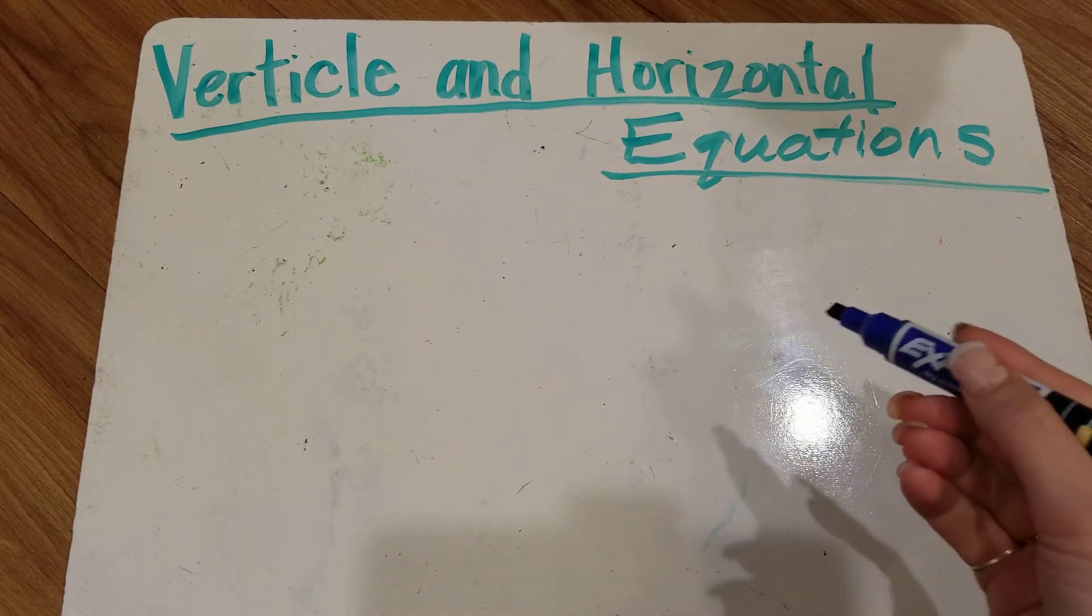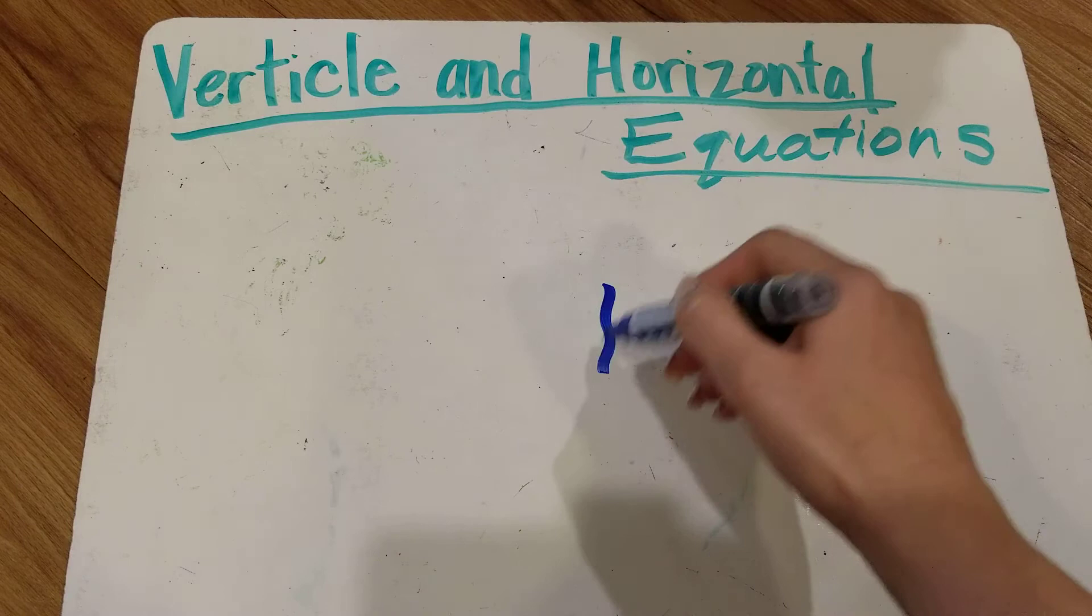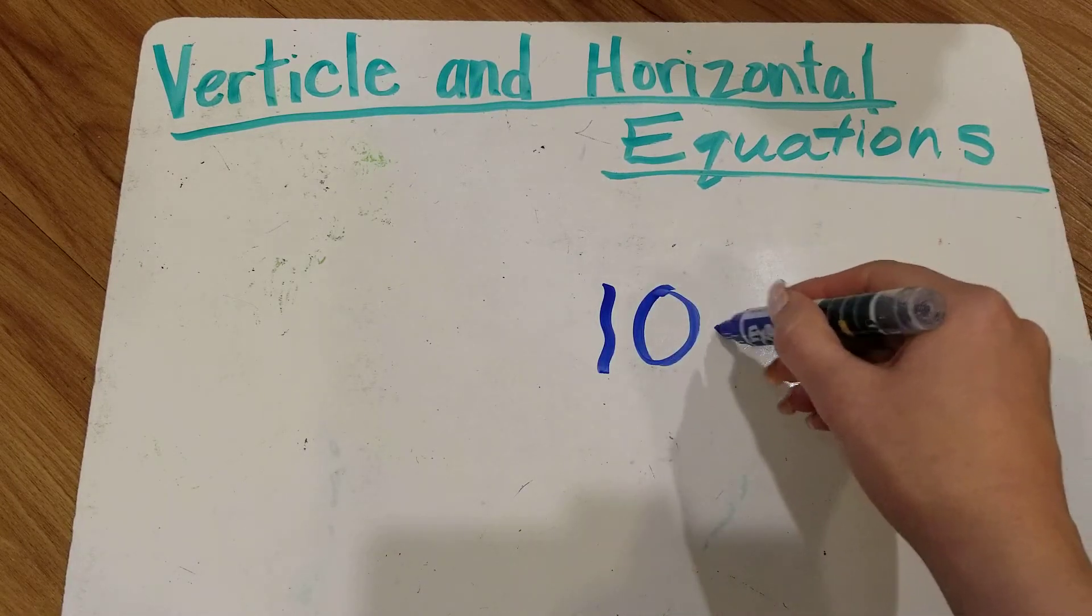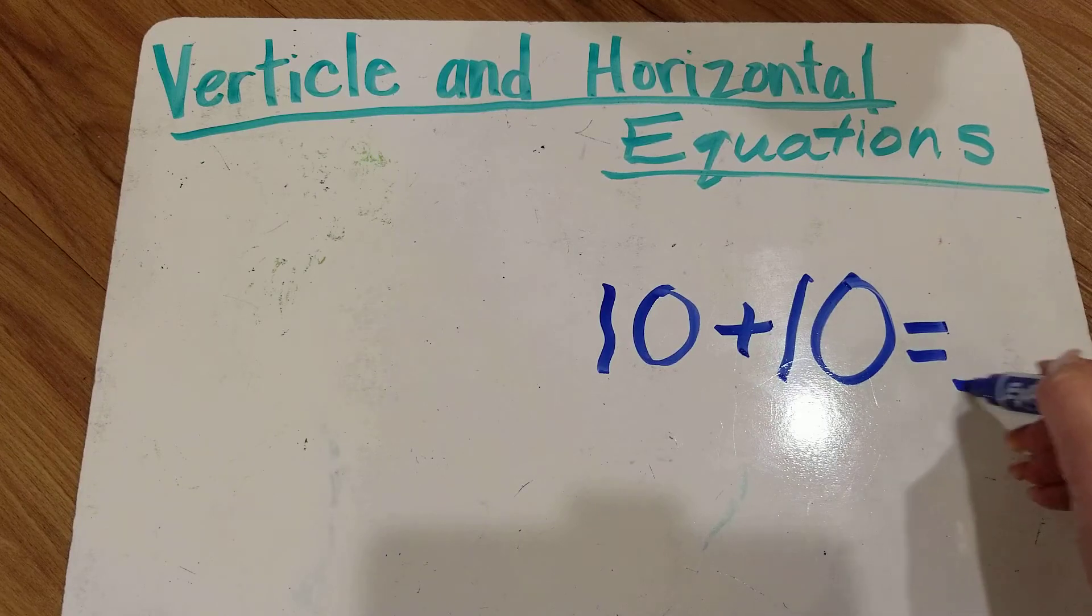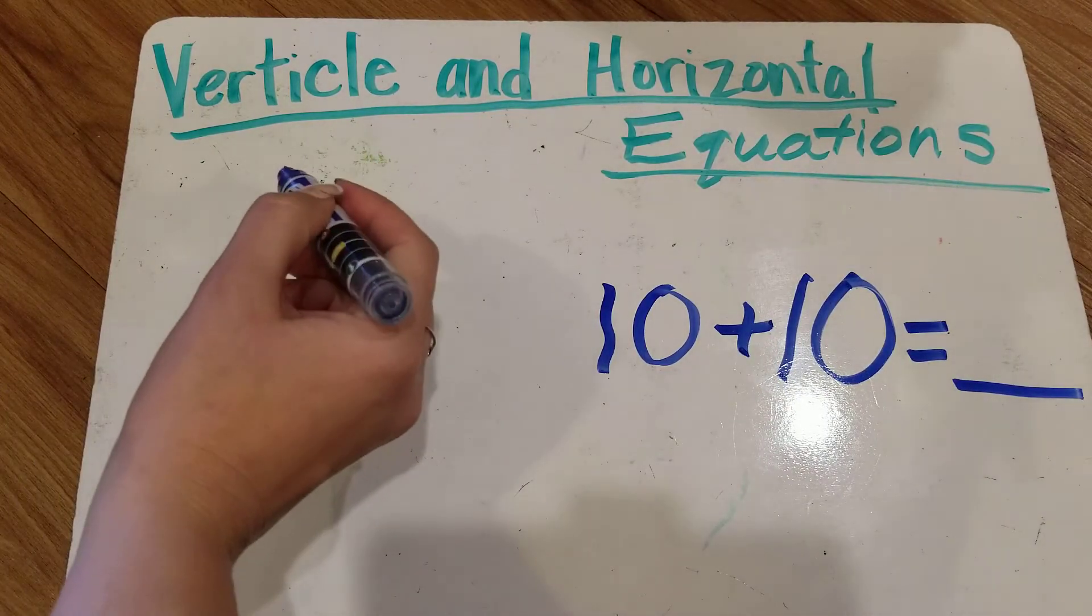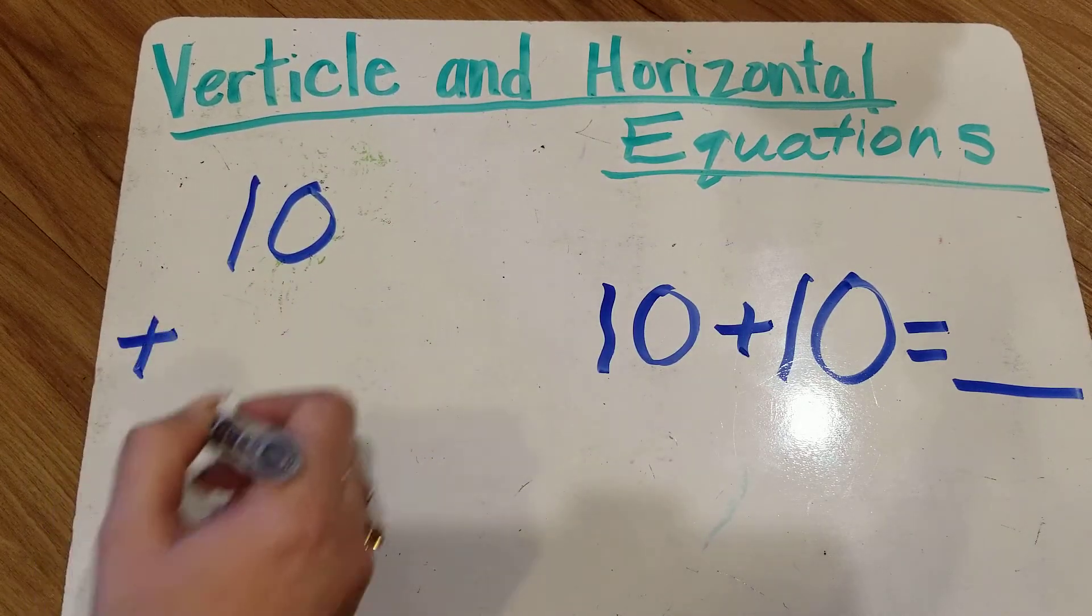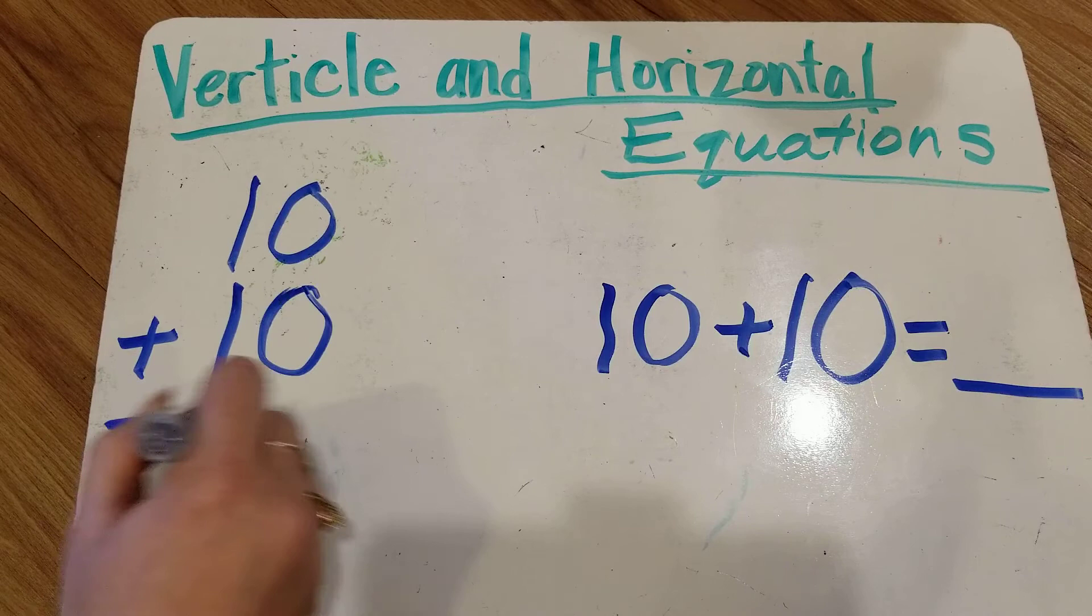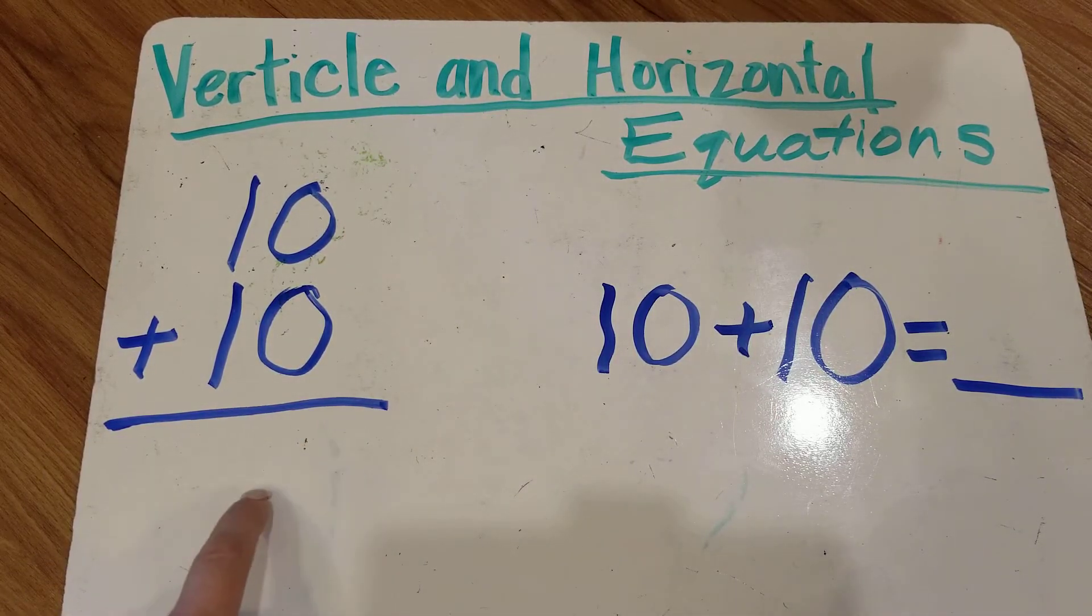First we're gonna do the horizontal equation because we're really used to that. 10 plus 10 equals blank. We're really used to that way. But if we do it the vertical way, 10 plus 10 equals with a line. Our answer is gonna go below the line.